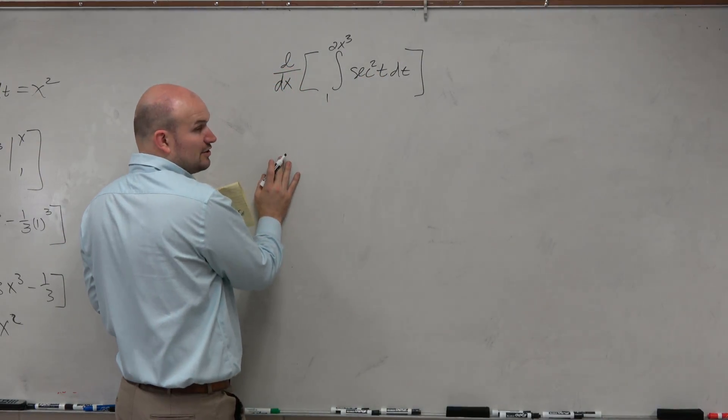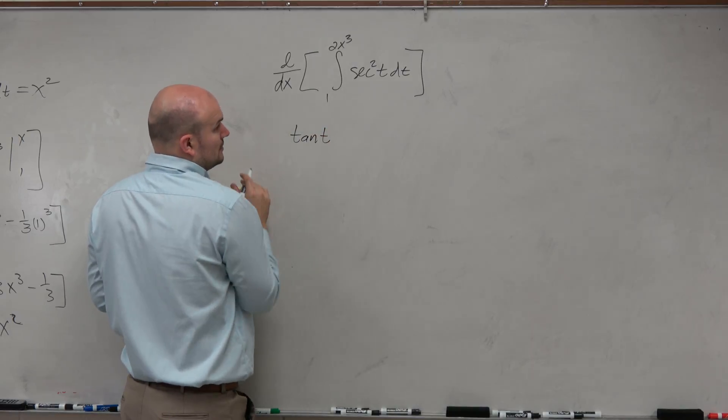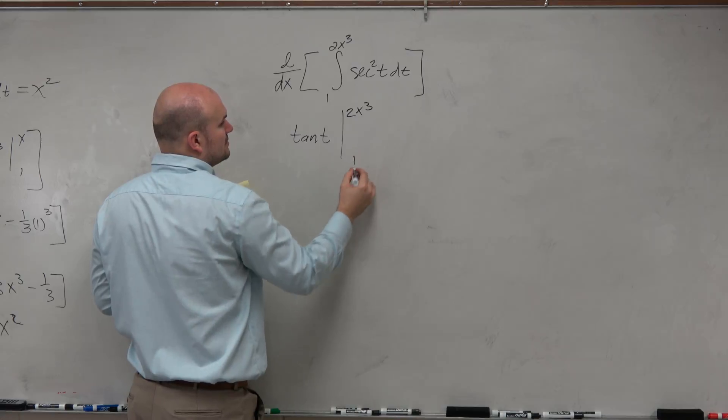So if we can integrate this, we can integrate that. That's going to be tangent of t. And then we're going to integrate that from 2x cubed to 1.